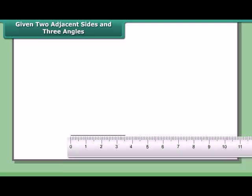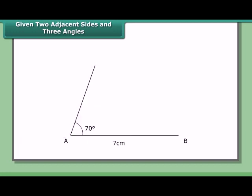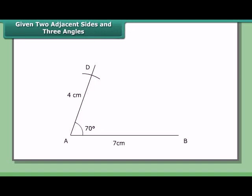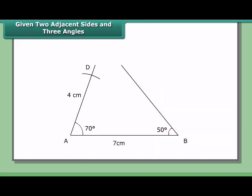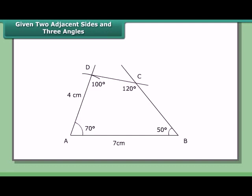Step 1: Draw line segment AB = 7 cm. Draw angle A = 70° using a protractor. With A as center and radius 4 cm, cut an arc on the line to mark D. At B, draw an angle of 50°. At D, draw an angle of 100° with a protractor. Let the arms of these angles meet at C. ABCD is the required quadrilateral.